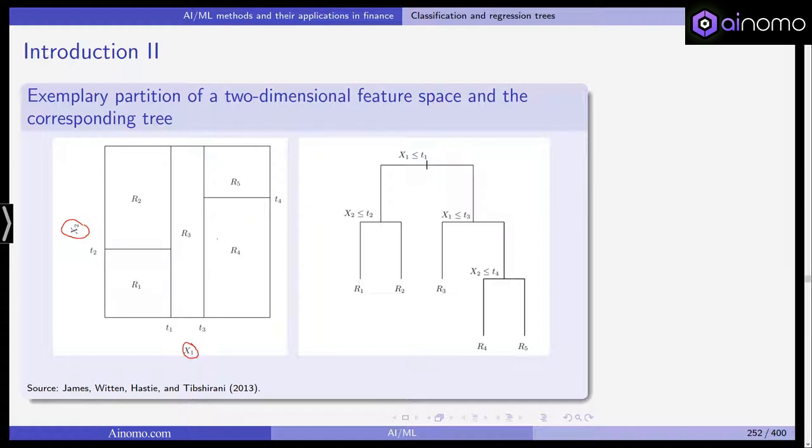And what happens is this corresponds to a tree that starts out with x1. If x1 is smaller or equal than t1, that's the cutoff, then it yields us boxes one and two. And how do we decide on whether it's a one or two? Well we say x2 is smaller or equal than t2, then we get to r1 and we are here.